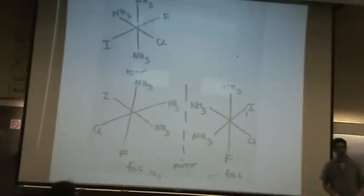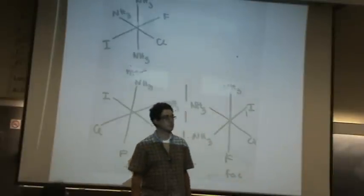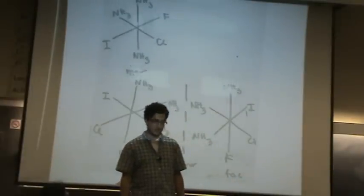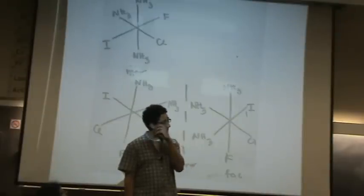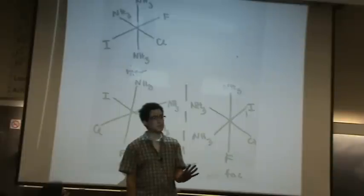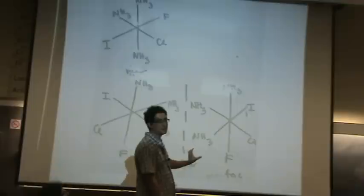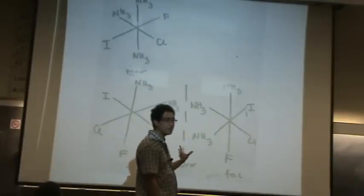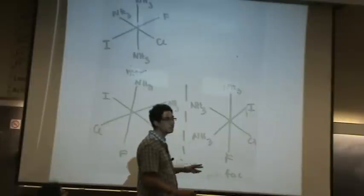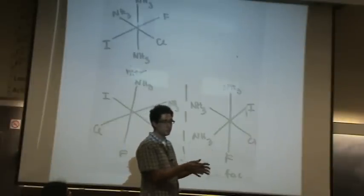Just to clarify, enantiomers, chiral, and optical isomers are all the same, right? Yes. Those terms—optical isomers, chirality, enantiomers—all the same. Really, chiral, when most people use it, refers to one particular molecule. This molecule on the left and right are chiral. They are together enantiomers of each other, and they are both optical isomers. So really those last two terms go with a group of things, a pair.